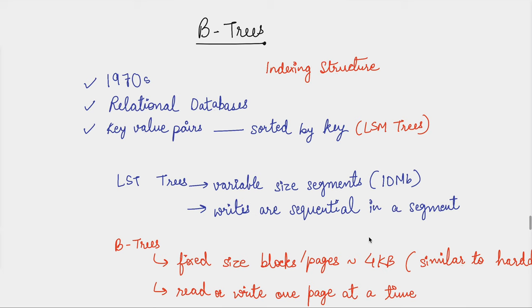What we have discussed so far are basically indexing structures which databases leverage to make read queries faster. We discussed indexing structures which were log-structured based approaches like LSM trees, which are leveraged by Facebook's RocksDB — you can check the video in the series to understand how they work. Today we're going to start with B-trees, which are page-oriented indexing structures.